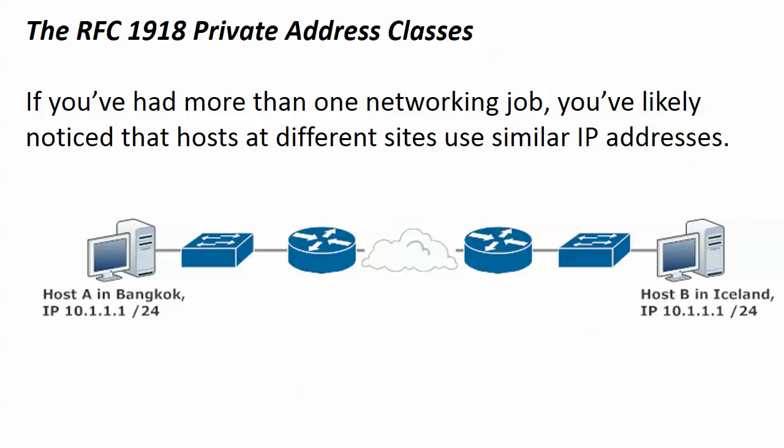That's possible because we have certain address ranges where the addresses are non-routable. So these hosts, by default, can't just go out to the internet. They can't even get out of their own local area network, because their addresses — the router's going to look at them and say, 'I don't route these packets. I'm not sending these out of here.'